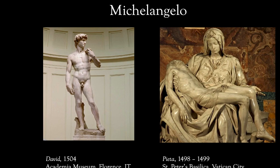Michelangelo was a passionate and determined worker — not a social partier like Raphael. He was very committed to his work, which could make him a little difficult to get along with. But this allowed him to present work that creates a sense of awe-inspiring grandeur — his work is breathtaking, jaw-dropping, awesome in the most literal senses of those terms. He was also devoutly Catholic and very abstemious, meaning he didn't go out and party like Raphael.